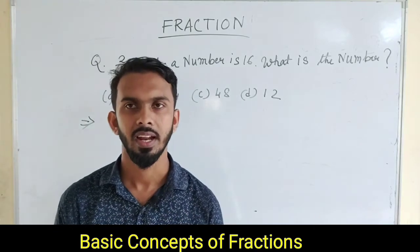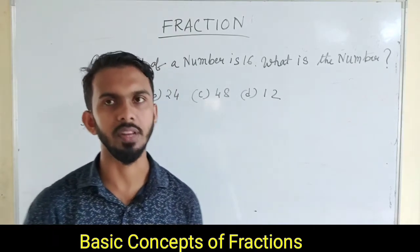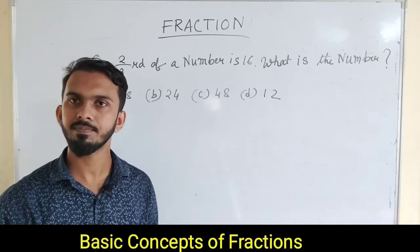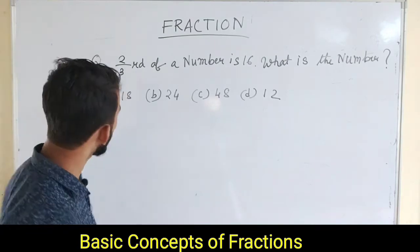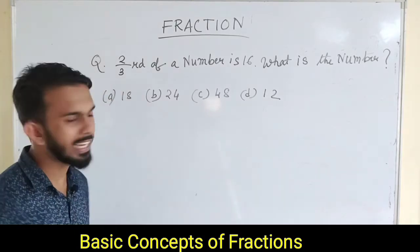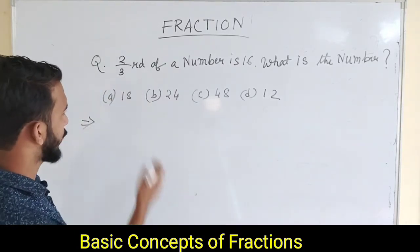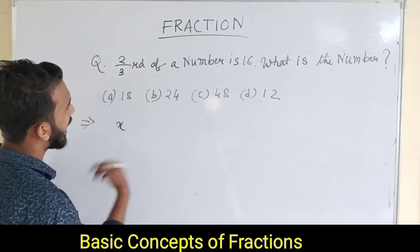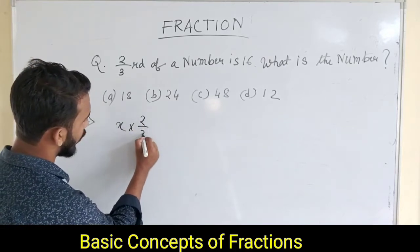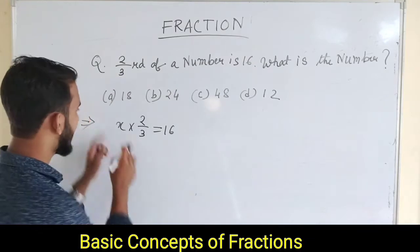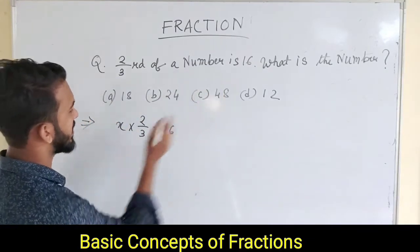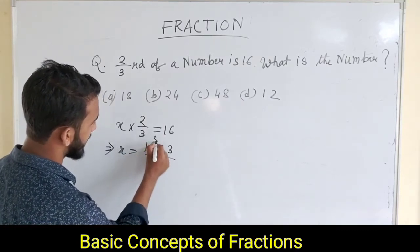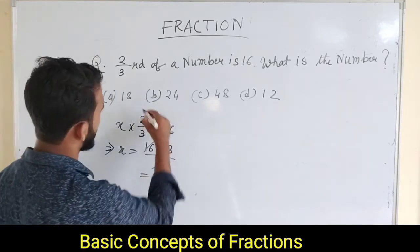In this video, you will be able to see the benefit. Now let's take a look at this question. We will follow the general method. 2 thirds of a number is 16 — what is the number? Let the number be x. So 2 by 3 into x equals 16. Therefore, x equals 16 into 3 by 2. That is 8 times 3, which is 24. The answer is B.